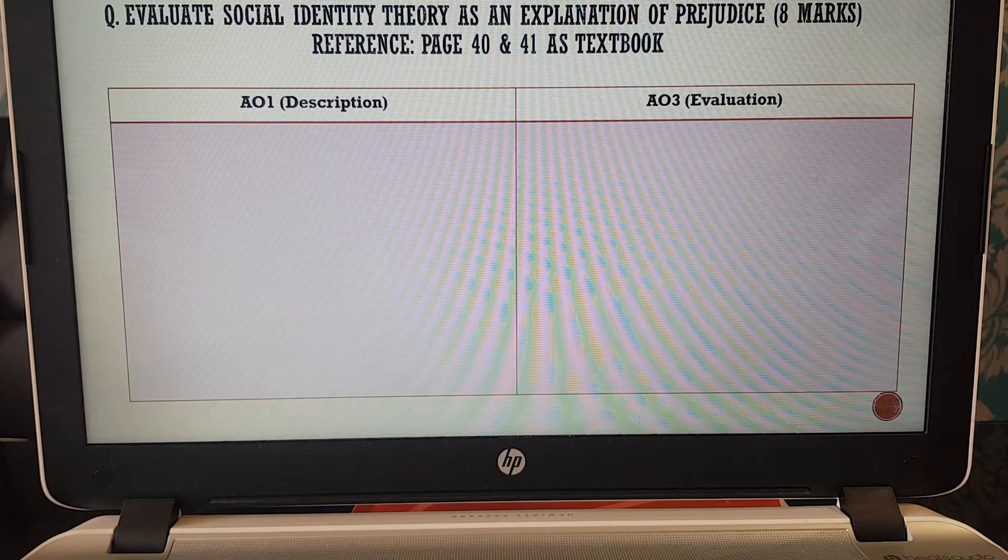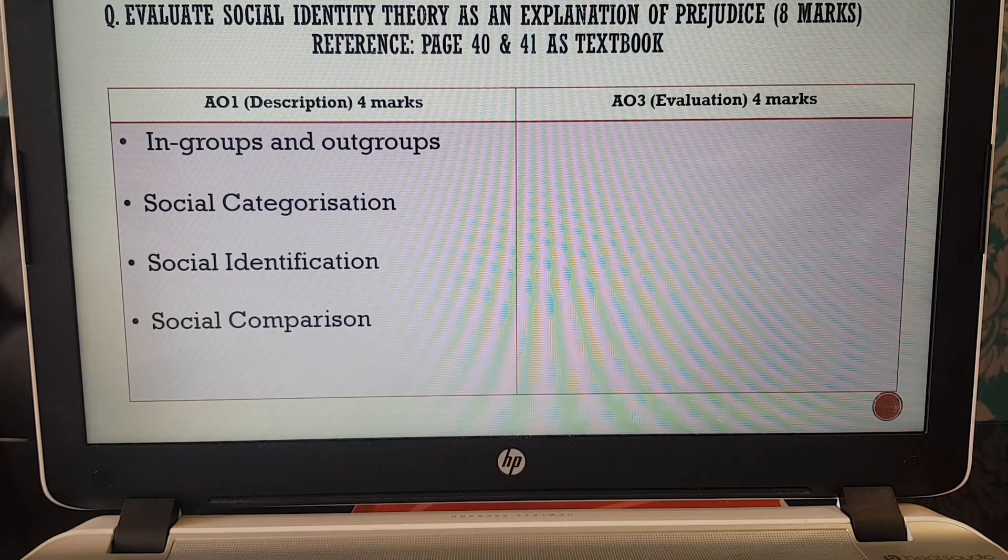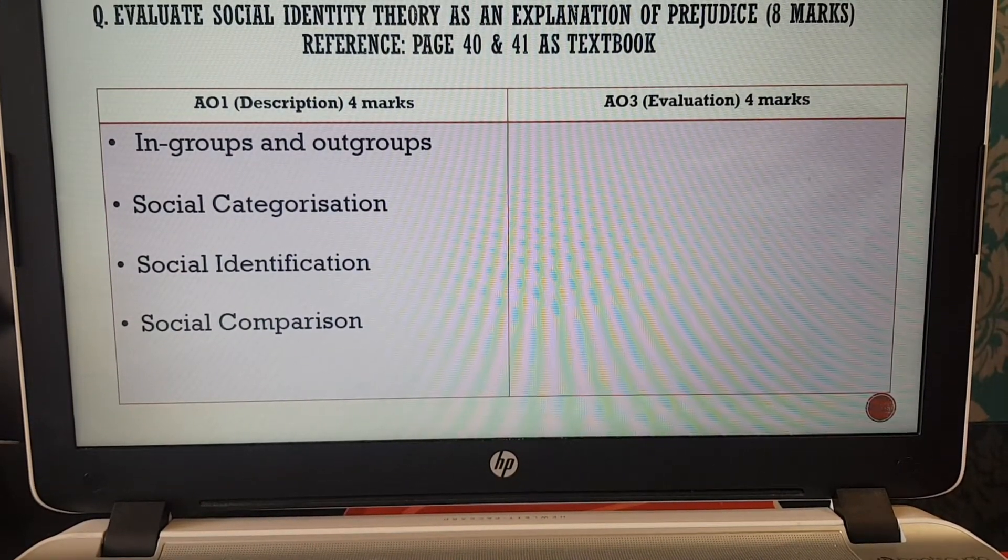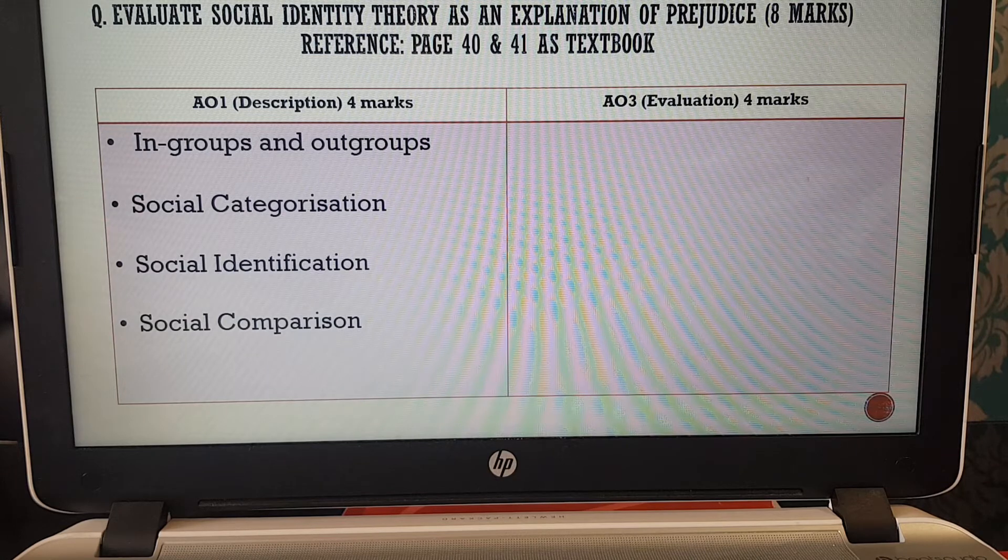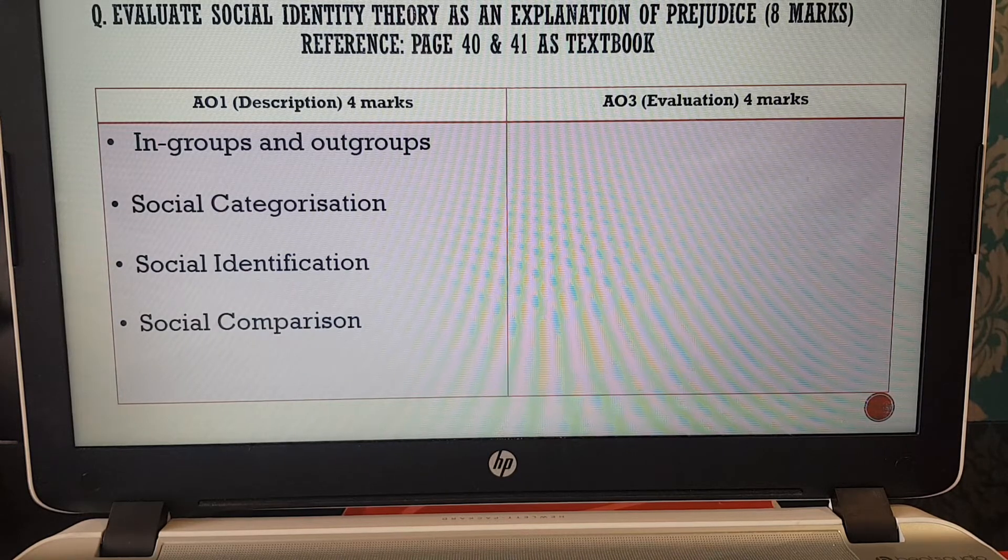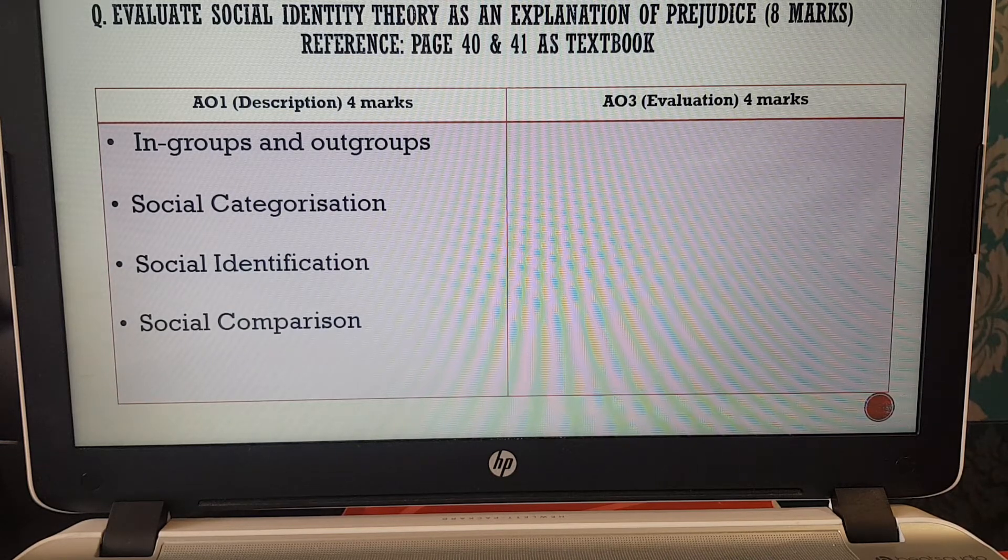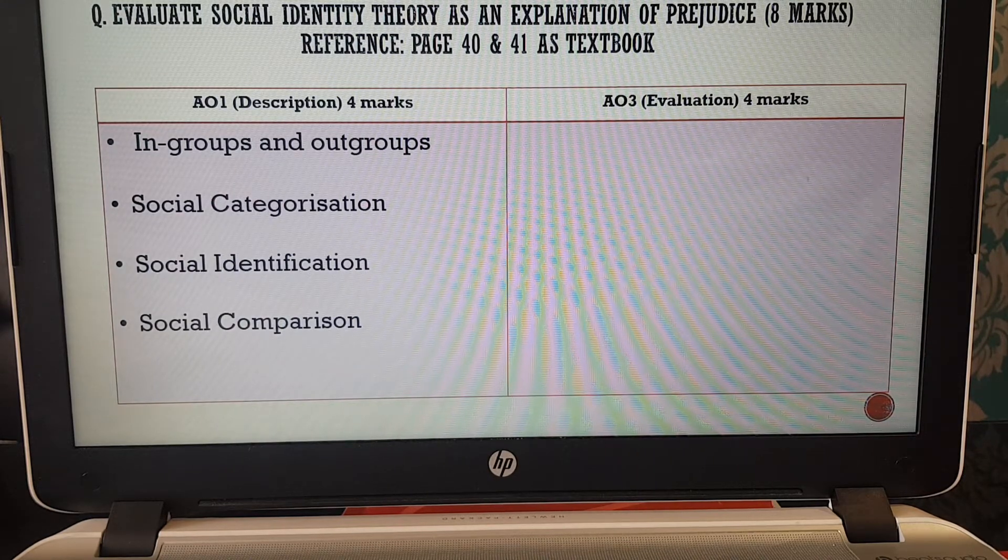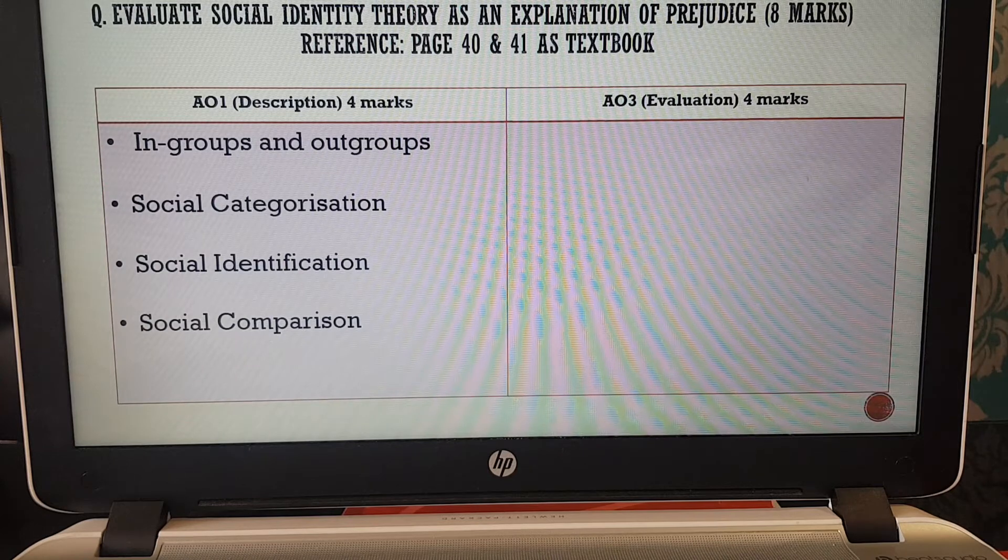We're going to start off with the description. The kind of things that you should be thinking about writing in this exam question are, firstly, what is social identity theory? We need to really start off by talking about the in-group and out-group behavior, because the whole principle of social identity theory is that putting people into groups leads to prejudice. So really, your opening paragraph needs to be about how putting people into groups leads to prejudice. The in-group is the group that you are a member of, and then the out-group is the other group.